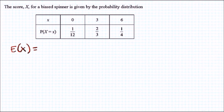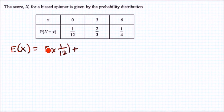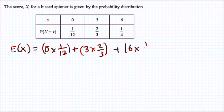Okay, here we are — question six. Given this 4-by spinner, we need to calculate the expected value of X. To do that we use the probability distribution and multiply the random variable X against each probability. So for every X: zero times 1/12, plus three times 2/3, plus six times 1/4. When you evaluate this you should get 3.5. That's it — done.